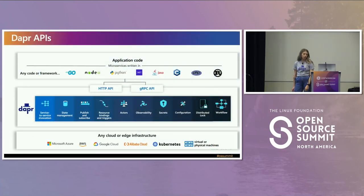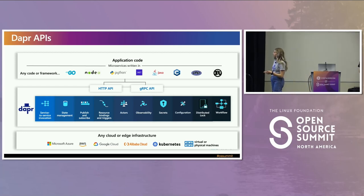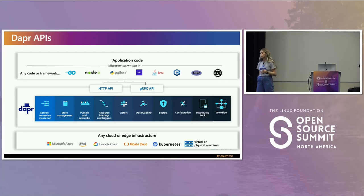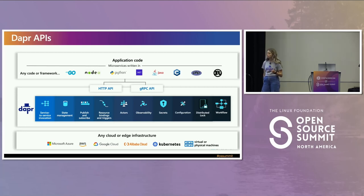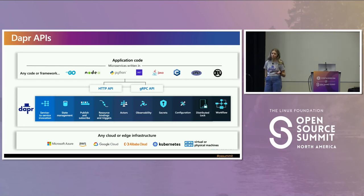So what are the DAPR APIs? There are around 10 different building blocks that you can take advantage of today. You can write them in really any language that you want to — .NET, JavaScript, Java, C Sharp. There are tons of SDKs, as well as you can use the HTTP and gRPC APIs via native clients for each of these languages.